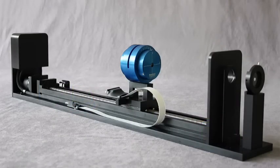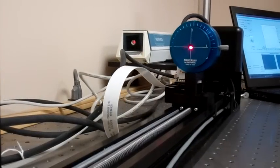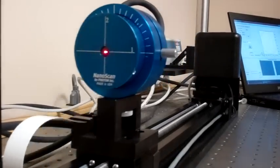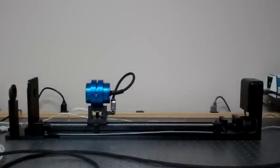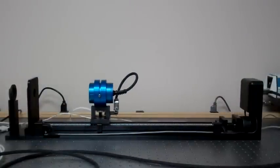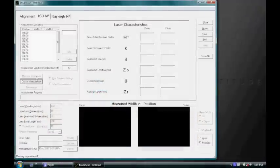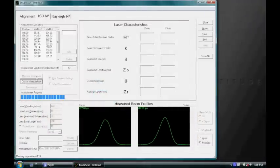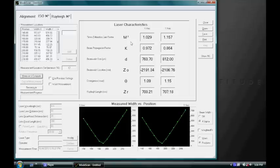The NanoScan-based NanoModeScan automatically measures the M-squared, Rayleigh range, divergence, and astigmatism for CO2 and other IR laser manufacturers. These products are used to assure quality when laser systems integrators perform incoming inspection for CO2 and other IR lasers.